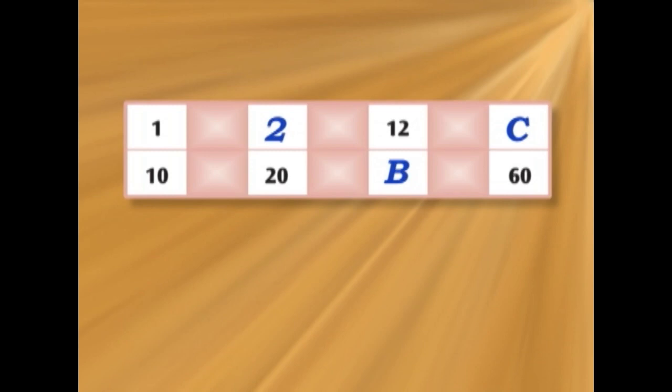So how many times must we multiply 2 to get 12? That's right. 6 times 2, 12. Now we have to multiply the 20 by 6 in the same way. And 6 20s are 120. So we know that B is 120.